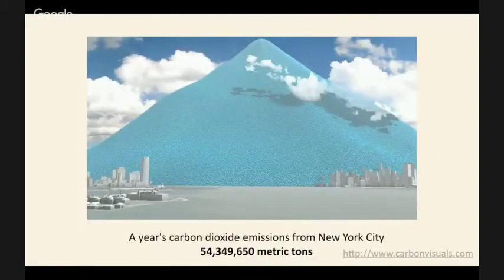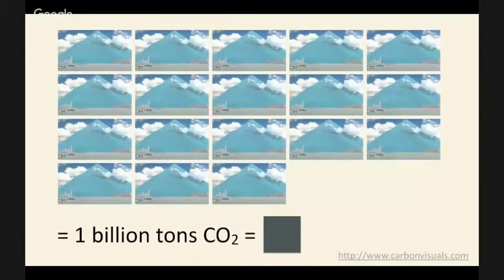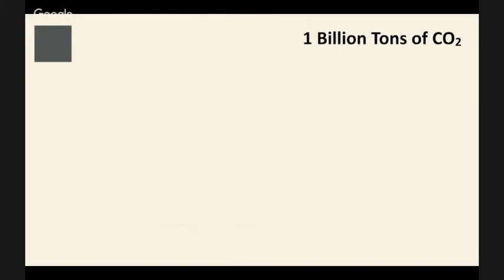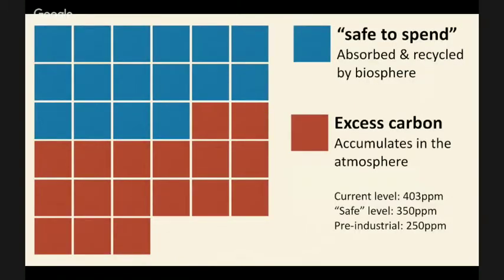Here is Manhattan's annual carbon emissions — 54 million metric tons piled up — a striking visual. To go from that to a billion tons of CO2, take New York and multiply by 18. So let's represent that with a square, and fill up the screen with squares to get 33 billion tons of CO2 — that's what we as a species put out back in 2013. As Chris pointed out, it's highly unsustainable. We have a notion of a safe-to-spend amount of carbon that gets recycled by the biosphere; everything else just accumulates, driving up those parts per million.